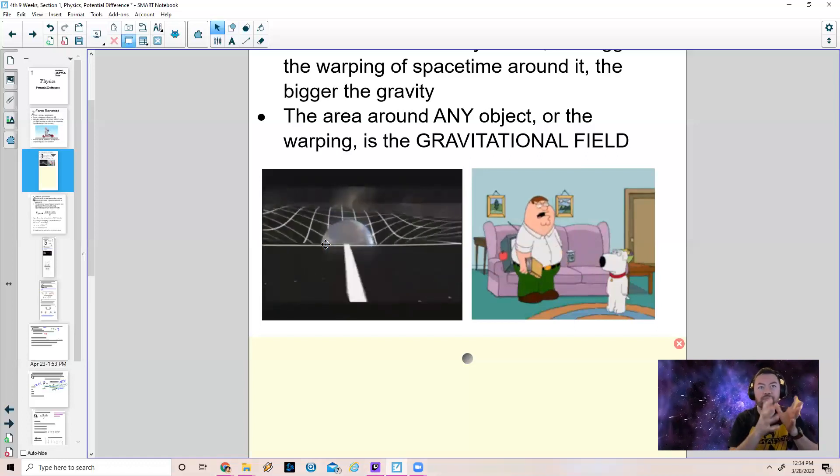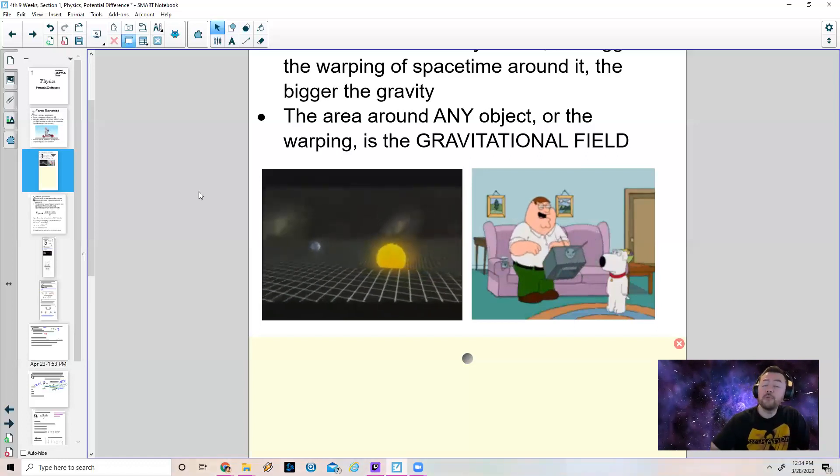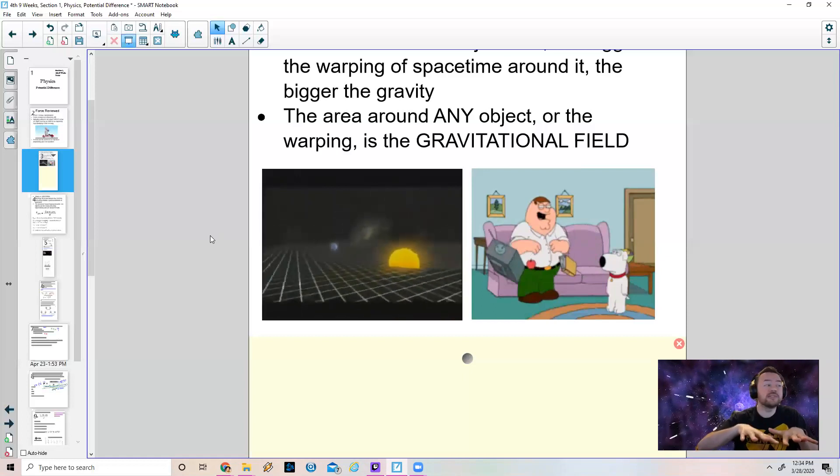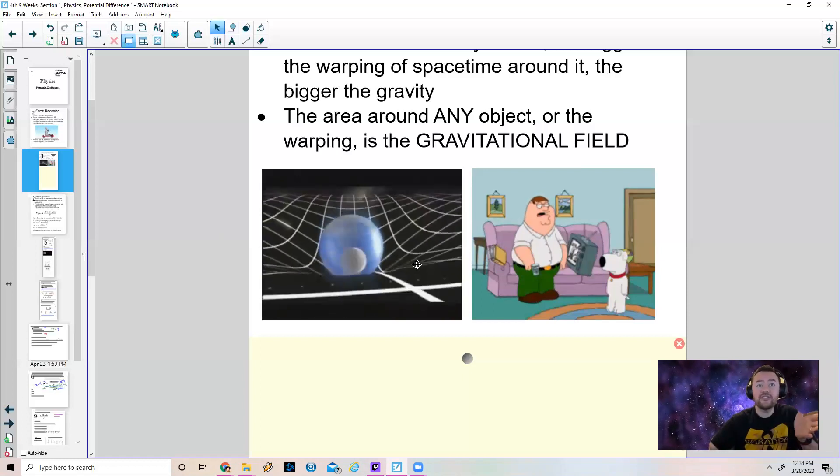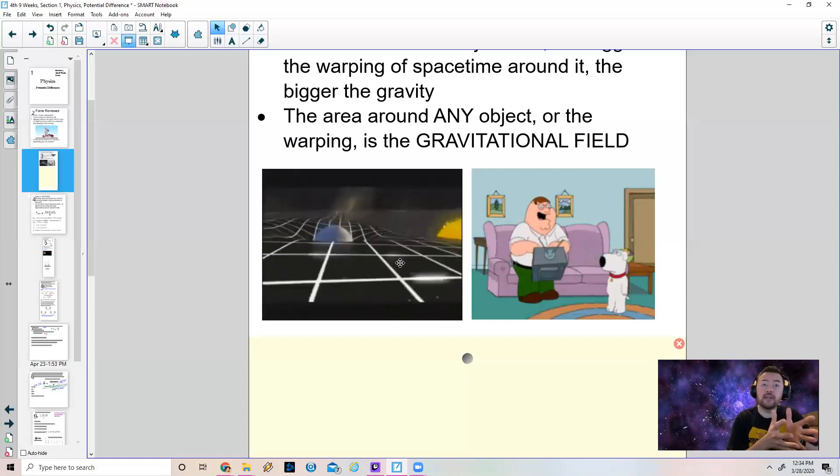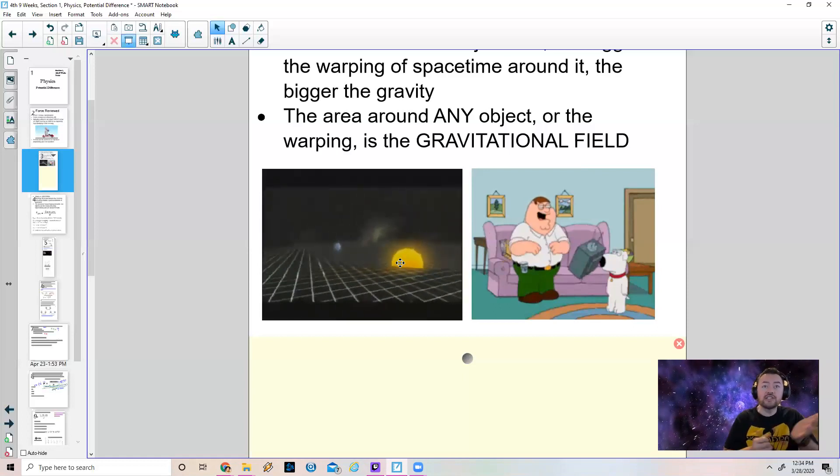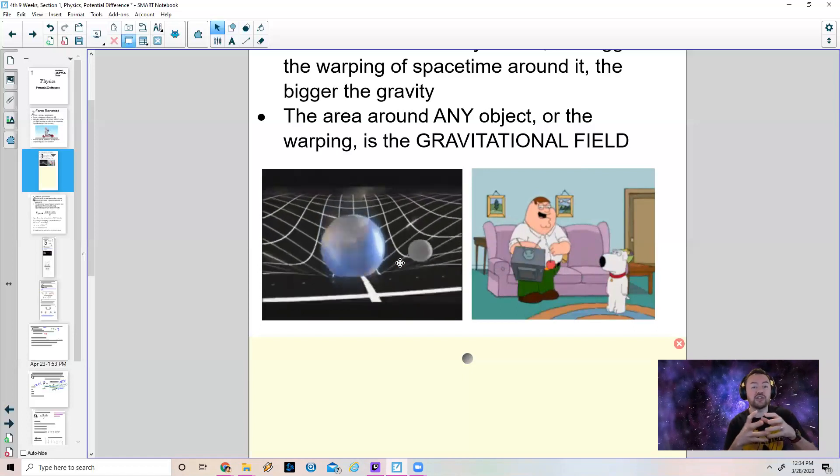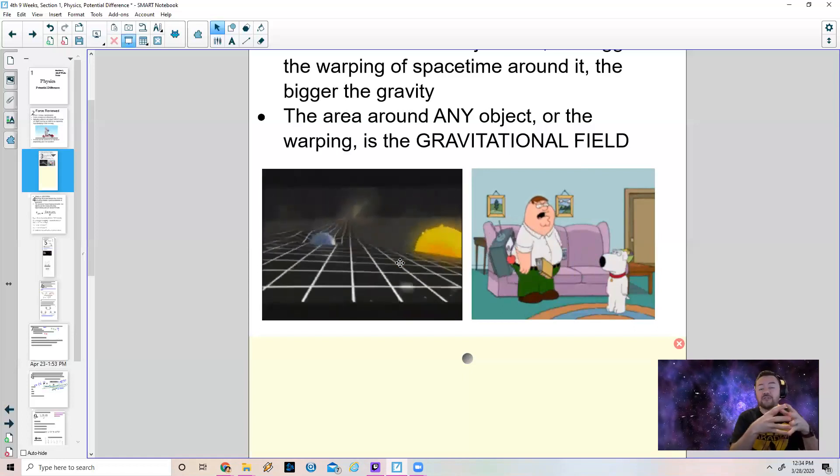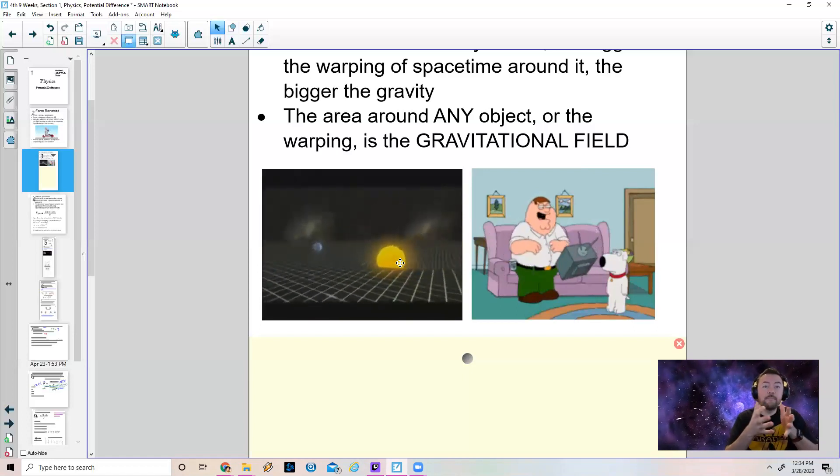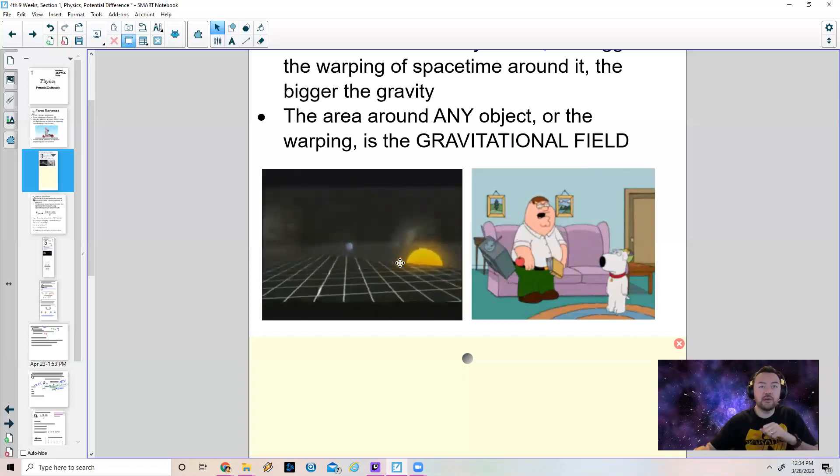Spacetime is four-dimensional, but anyway. But not only that, but the Moon also causes a disturbance in spacetime. The Sun does the same thing. The Sun is far more massive than the Earth, so it creates a greater depression, a greater warping of spacetime, or just a bigger or stronger gravitational field.